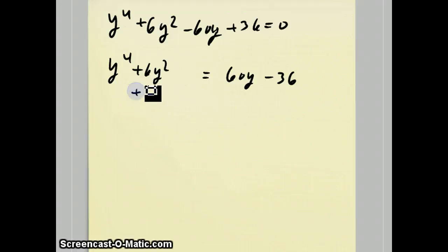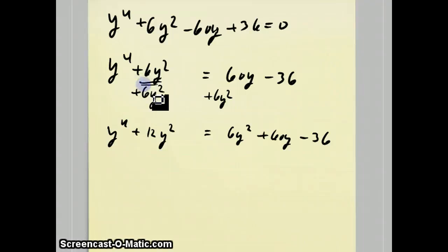Well, we need to get some squares on the right-hand side. So if I add 6y² to both sides, the left side becomes this, and the right side becomes 6y² + 60y - 36. Now, this is a new trick. You add this to both sides, and that way this thing will always be even, which is what we want. It makes it easier to make it a perfect square.